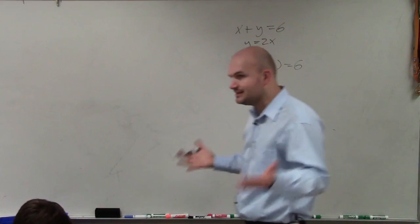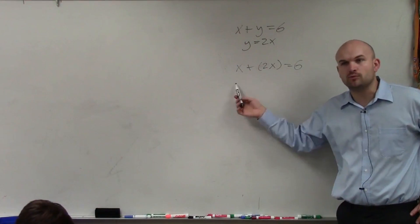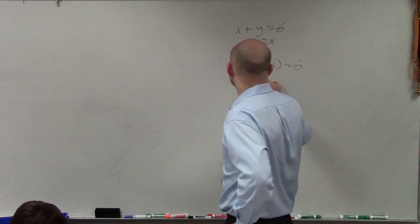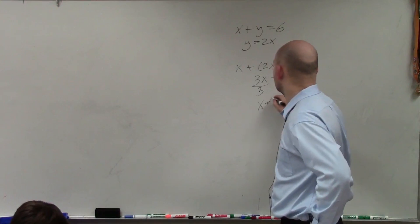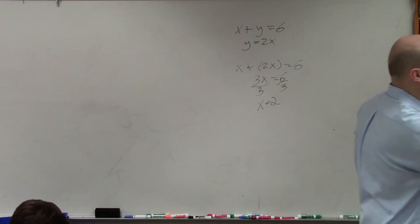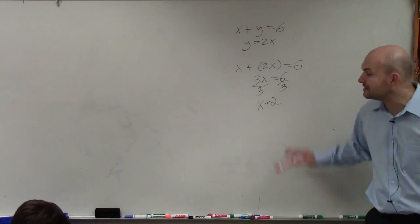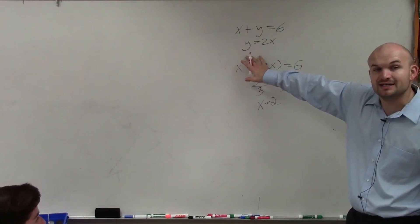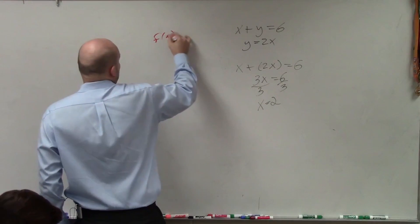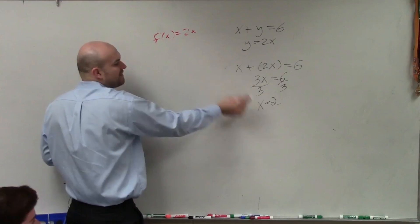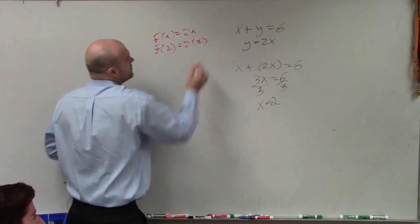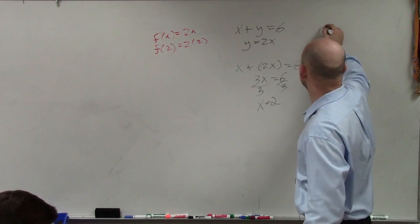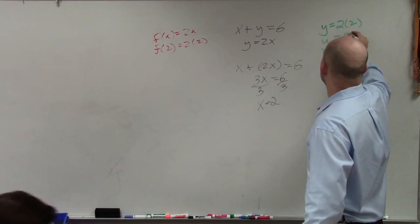Now I have one equation with one variable. I combine like terms and solve for x — now I know the value of x is 2. But we need the value of y as well. Since y equals 2x and x equals 2, I substitute: y equals 2 times 2, so y equals 4.